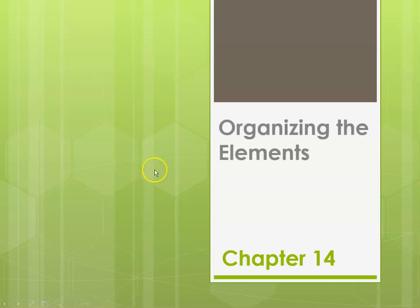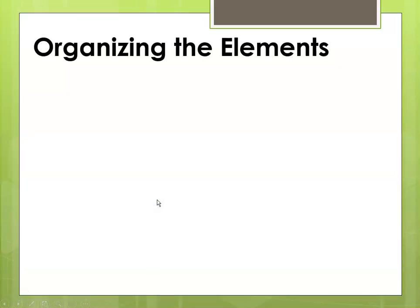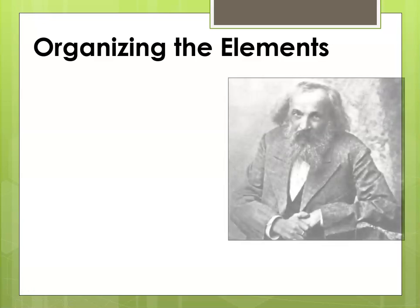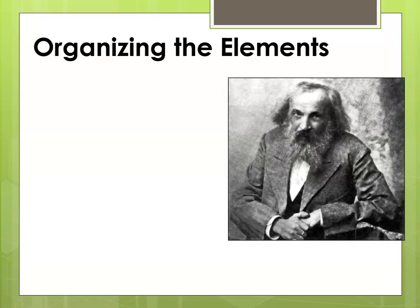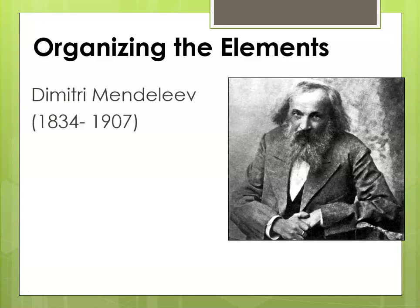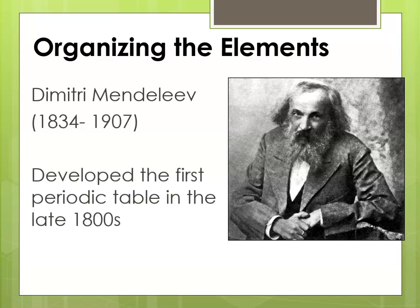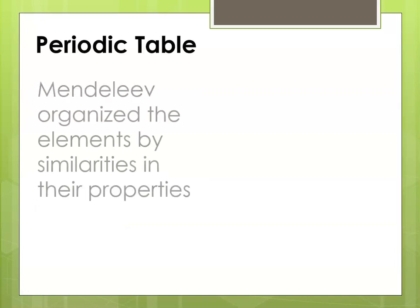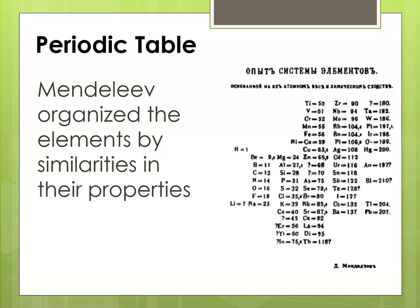Hello class, this is Miss Augustine and today we're going to start Chapter 14, which is about organizing the elements. For starters, the first person to organize the elements into some sort of a chart was Dmitry Mendeleev, and he developed the first periodic table in the late 1800s. He organized the elements according to similarities in their properties.